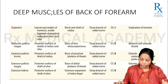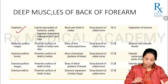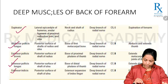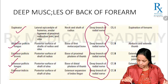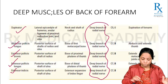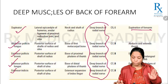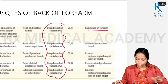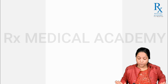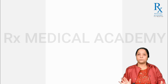This concludes the muscles of the posterior compartment of the forearm. In summary, the deep muscles are supinator, abductor pollicis longus, extensor pollicis brevis, extensor pollicis longus, and extensor indicis — all supplied by the deep branch of the radial nerve, primarily producing extension. The supinator provides supination, and abductor pollicis longus also produces abduction of the thumb. Next, we will discuss the anatomical snuff box. Please review these muscles before that session.